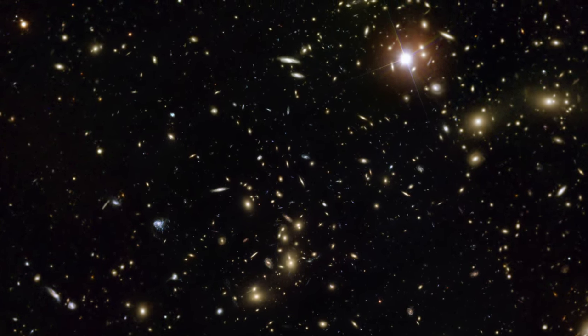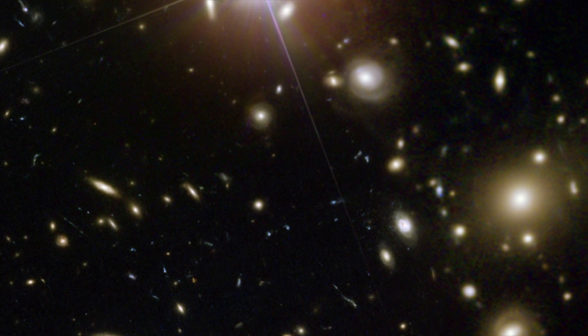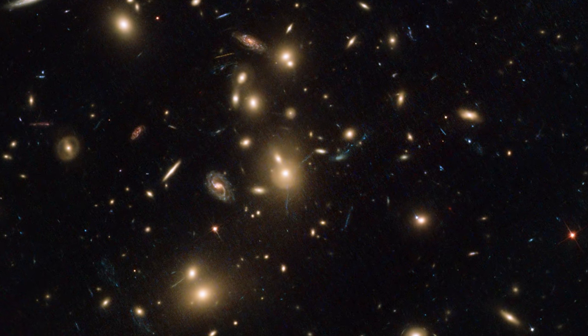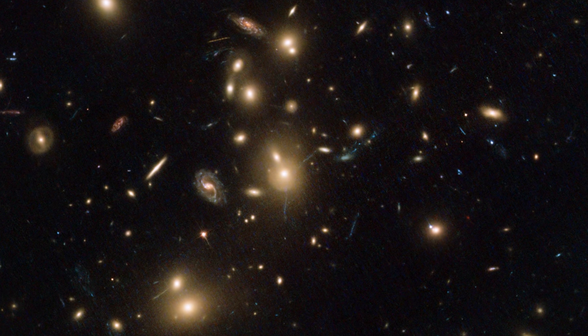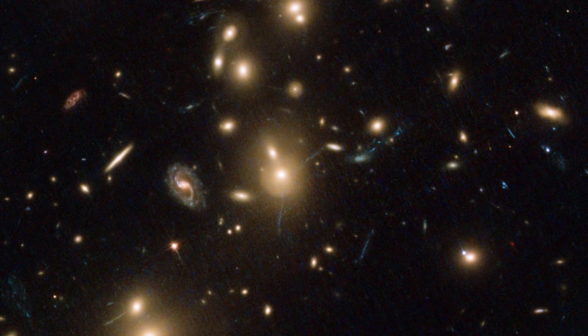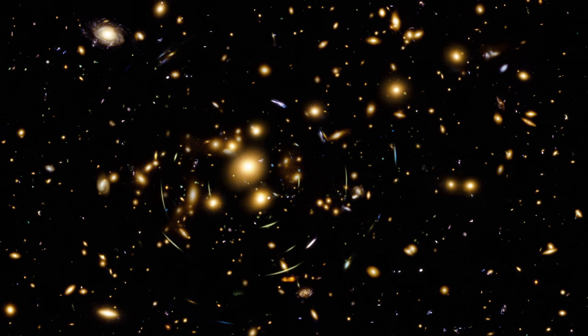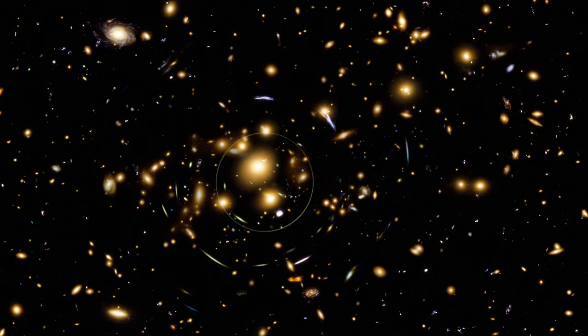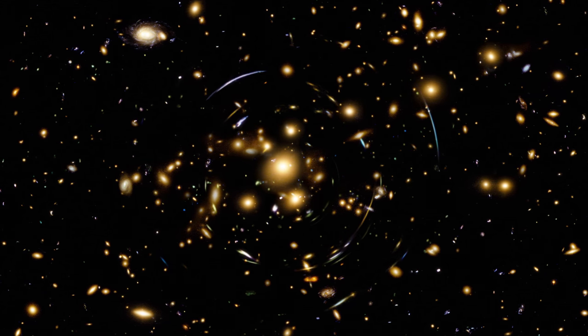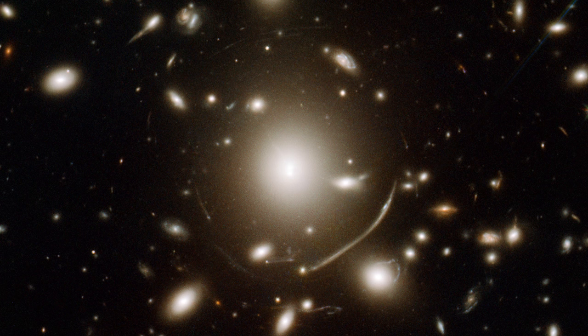ABEL 2744 – one of the first and most captivating targets of the Frontier Fields campaign. Like all large galaxy clusters, ABEL 2744's mammoth mass is warping the space around it and magnifying the light from distant galaxies behind it. This produces weird and wonderful arrangements of warped light in the form of arcs and distorted shapes.